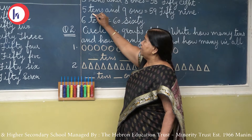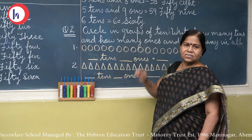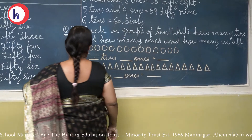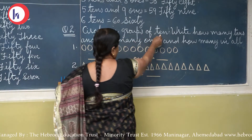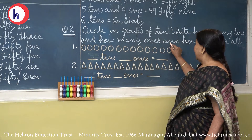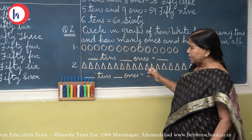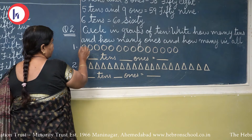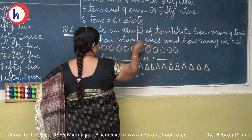Now just now we learned this. 5 tens and 1 — 51. 5 tens means 50, and 50 and 1 which will form? 51. Same with 5 tens and 2 — 5 tens means 50, 50 and 2 which will form? 52. Next: 5 tens and 3 — 5 tens means 50, 50 and 3 which will form? 53. 5 tens and 4 — 5 tens means 50, 50 and 4 which will form? 54. 5 tens and 5 — 55.